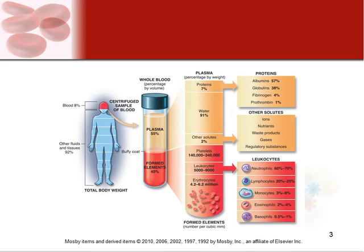Your blood is comprised of a few different things. Most of it is plasma, which is that liquid portion of blood — 91% of plasma is actually water. Then 45% of your blood is the formed elements, which are not dissolved but stay formed. Those include your platelets, your leukocytes (white blood cells), and your erythrocytes (red blood cells).